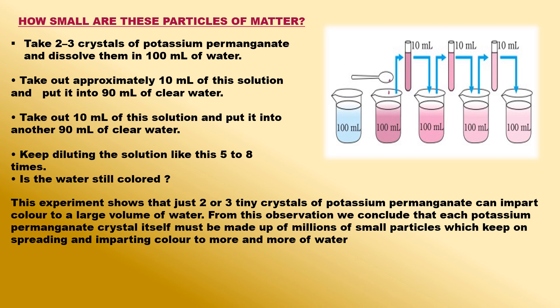Due to this dilution, the color of potassium permanganate solution in the second beaker becomes a bit lighter. Now take 10 ml of potassium permanganate solution from the second beaker and mix it with 90 ml of water in the third beaker to dilute it further. The color of the solution will become still lighter. We keep on diluting the potassium permanganate solution like this a number of times.